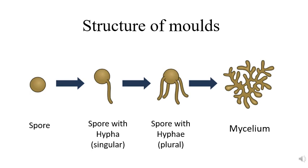Molds all begin with a single spore. That spore then forms a hypha, or thread-like structure — the singular form. Over time, many of those thread-like structures form to become the plural hyphae. Eventually, with multiple hyphae and multiple spores, you will form what's called a mycelium, which is like a mass, and that is the mold you will usually see on food or other items.